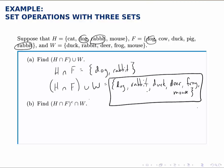But if we think about what's being asked for, we want the elements that are not in that, but are in W. So what is not in that intersection, but is in W. In other words, we'll take the elements from W and remove any of them that appear in H intersect F.